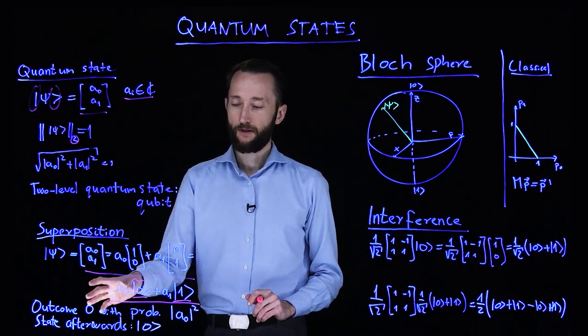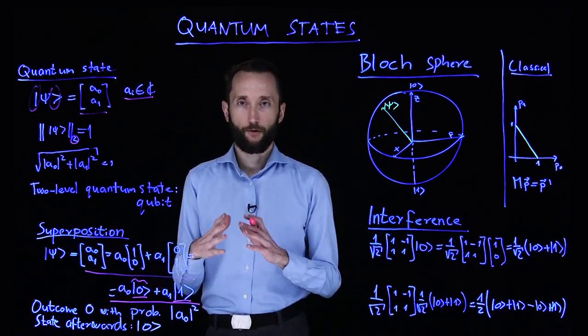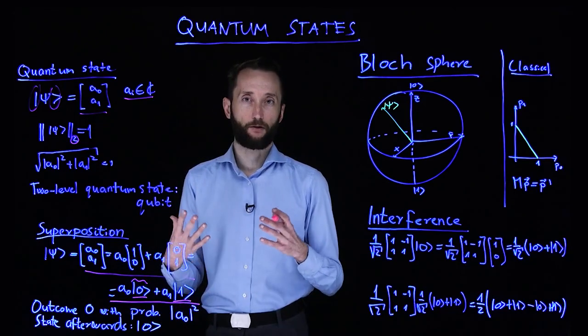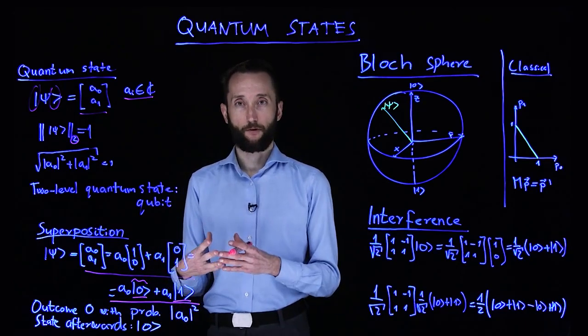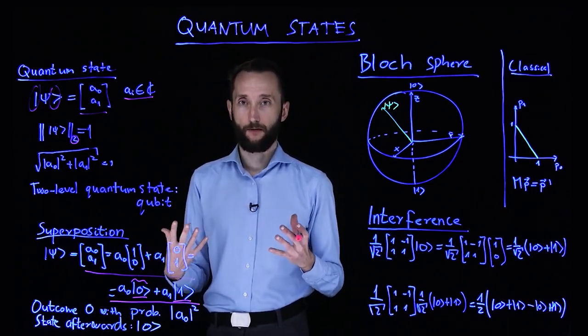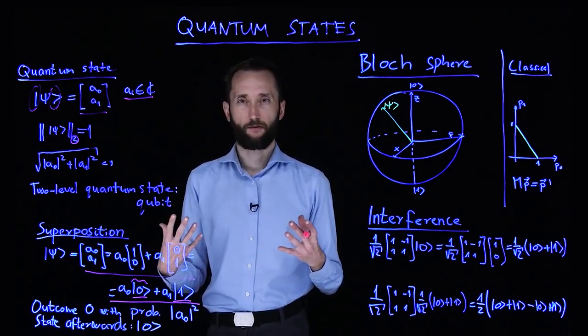And once you get an outcome zero, you know that the state is in the zero state. And similarly, if you get the outcome one, afterwards the state is going to be in the state one. This is called the collapse of the wave function. A quantum state is also called a wave function.